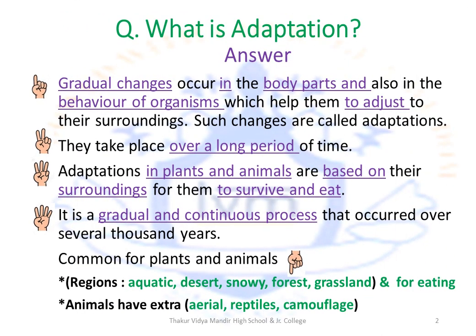What is adaptation? Adaptation is basically a gradual change that occurs in the body parts and in the behavior of organisms, which helps them to adjust to their surroundings so that they can survive and eat. Adaptations are not sudden. They are gradual and continuous and they take place over a long period of time.